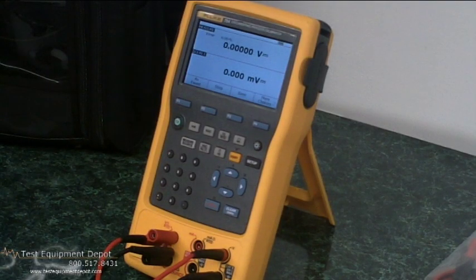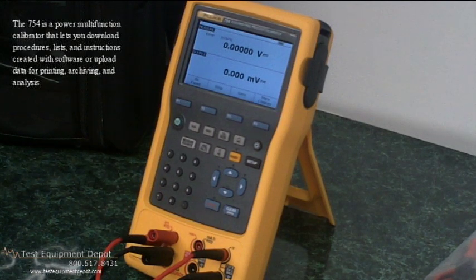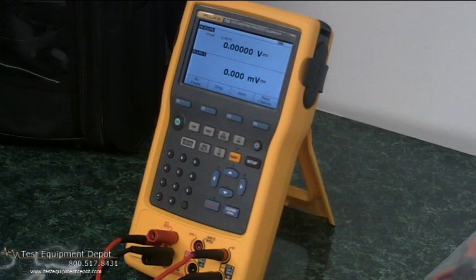The Fluke 754 is a very powerful multifunction calibrator that lets you download procedures, lists, and instructions that you create with software, or you can upload data for printing, archiving, and analysis.